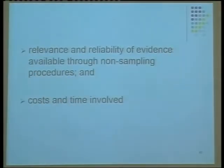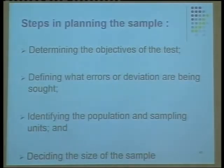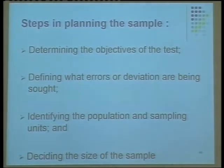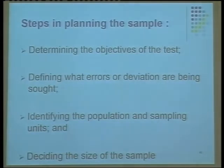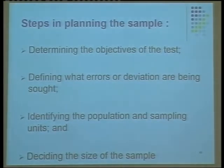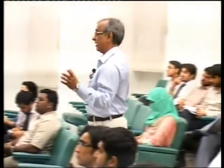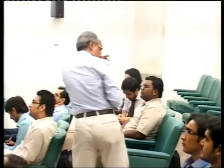What are the steps in planning the sampling? First, you need to decide the objective of the test — that is important. Then, defining what errors or deviations are being sought — what constitutes an error is very important. Every error in a sample does not necessarily mean an error for our audit purposes. Next, identifying the population and sampling units — selecting the sampling units is also very important.